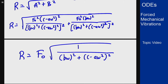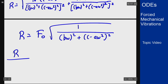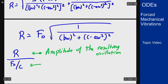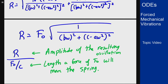Now I want to get this into a more usable form, specifically the expression r divided by f0 over c. The reason this is interesting is that r is the amplitude of the resulting oscillation, while f0 over c would be the amount the spring would be compressed by a stationary non-oscillating force of magnitude f0. So this ratio models how much the oscillation at frequency omega affects the resulting amplitude compared to just applying that static force.